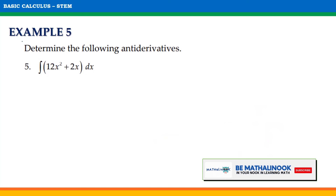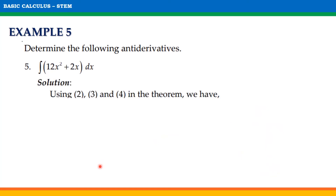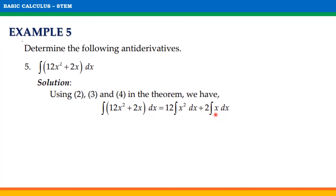Another example: solve for the indefinite integral of 12x squared plus 2x with respect to x. Using theorems number 2, 3, and 4, we will have 12 times the indefinite integral of x squared with respect to x plus 2 times the indefinite integral of x with respect to x. This equals 12x cubed over 3 plus 2x squared over 2 plus c. Simplifying 12 over 3 and 2 over 2, we get the final answer 4x cubed plus x squared plus c.